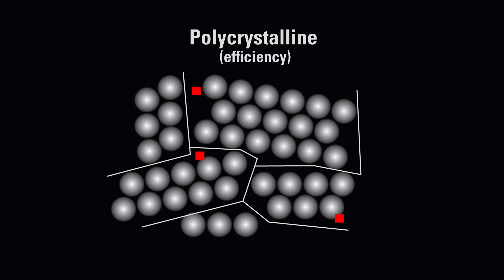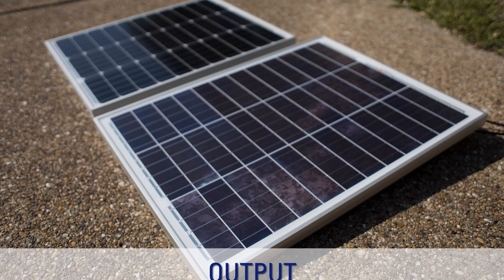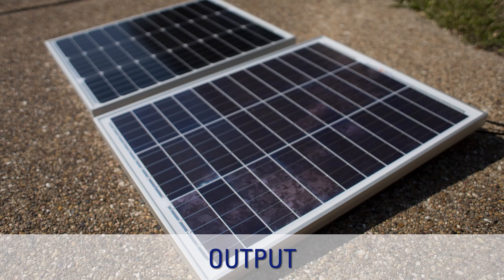Polycrystalline panels used to be a lot less efficient 10 or even 5 years ago, but they can now convert around 15% of solar energy into electricity. This has been achieved by increasing light absorption, decreasing the recombination losses at the surface, and optimizing the doping of different layers. Related to efficiency is their output.